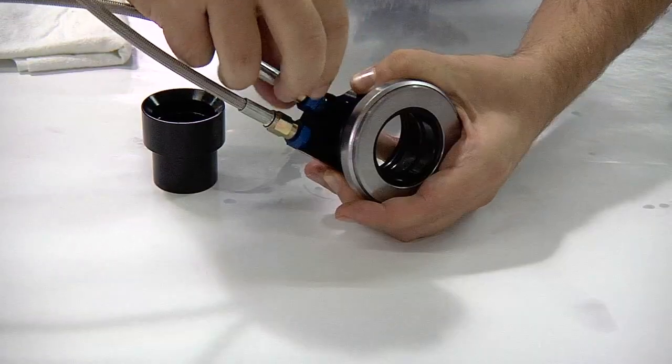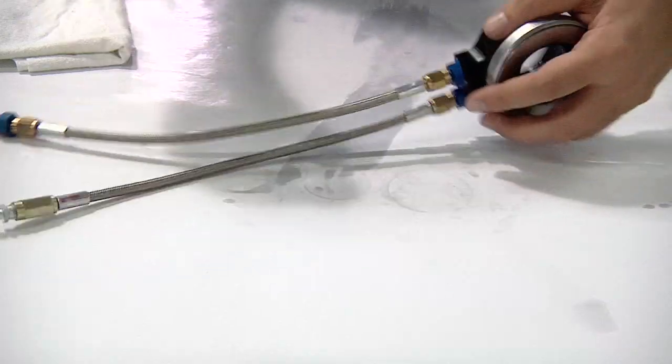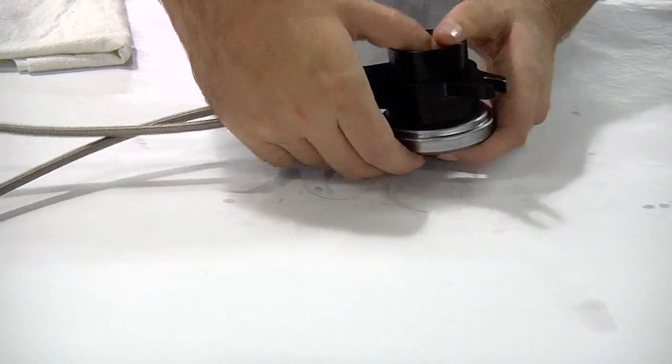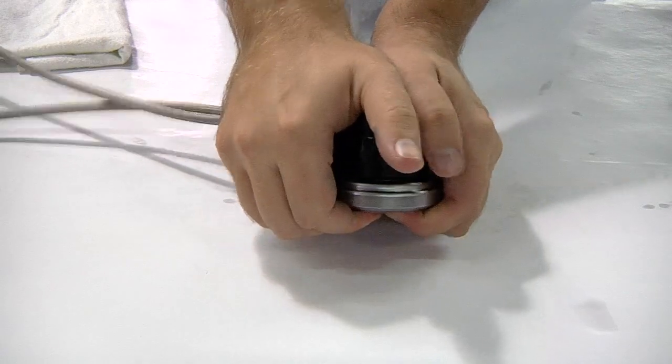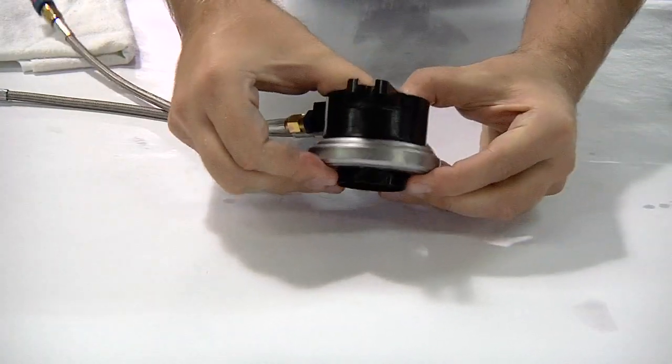Attach AN fittings and lines. Carefully install the piston, ensuring that it sits squarely and does not pinch or twist the seals. Bleed the release bearing and you're done.